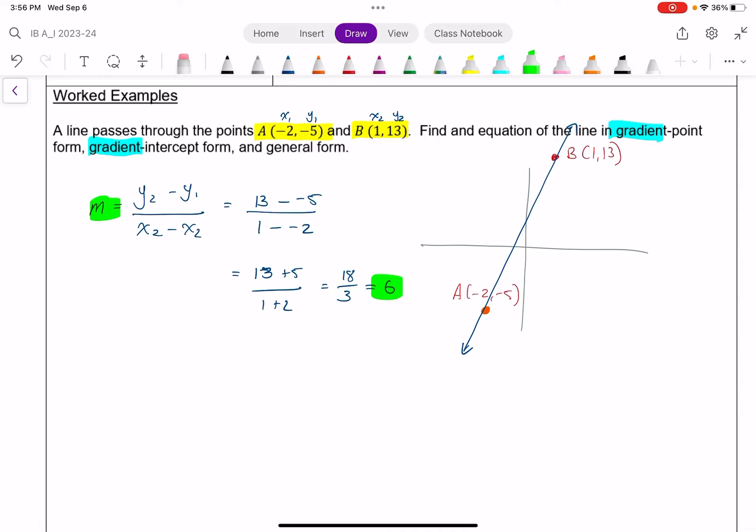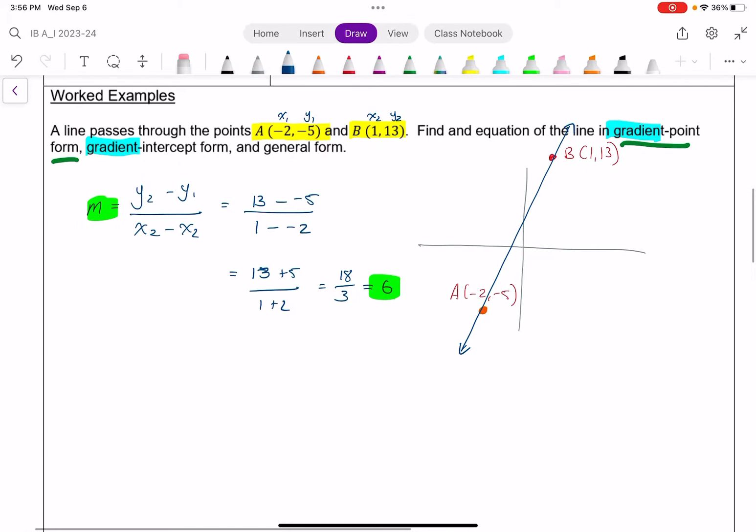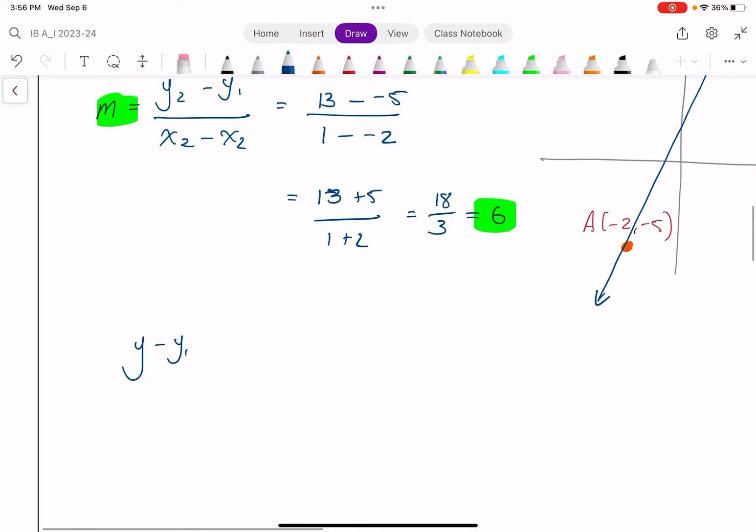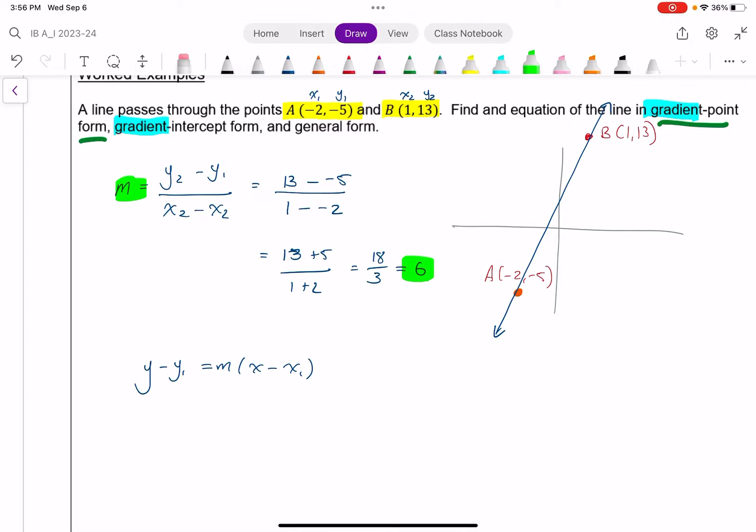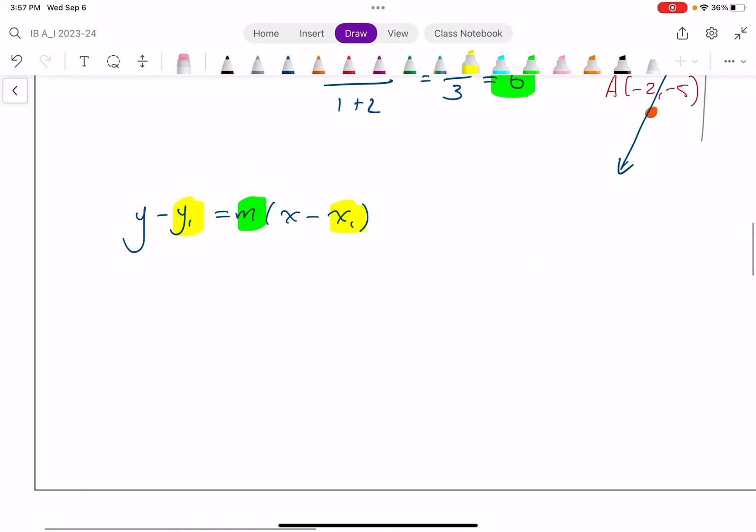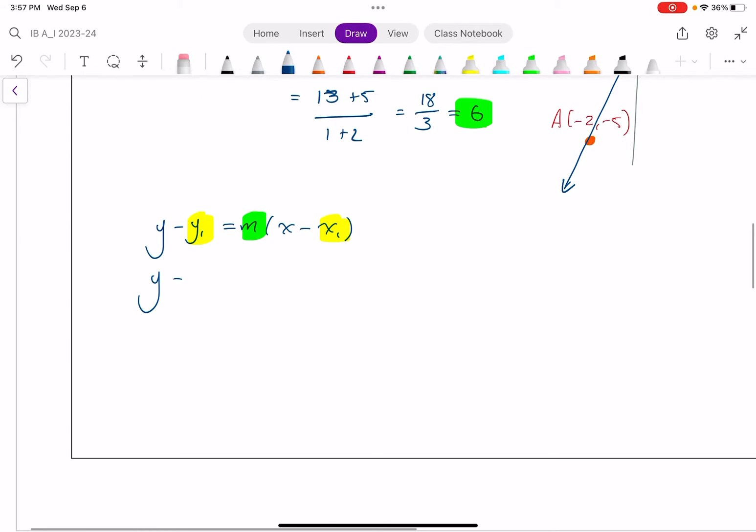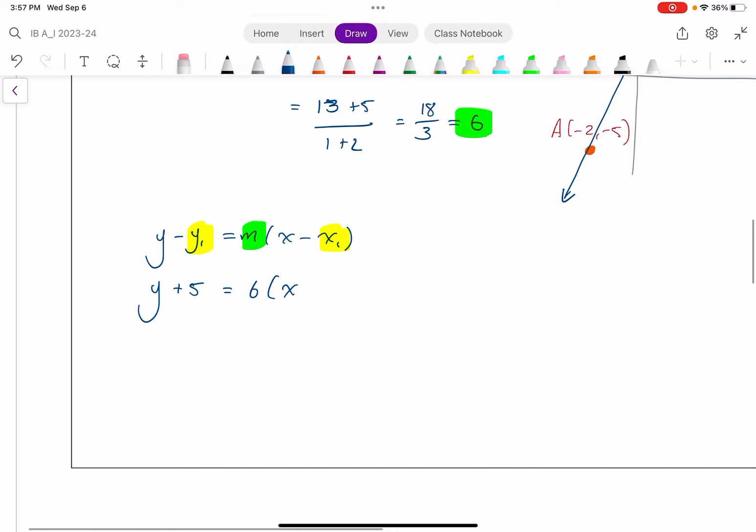All right, now I can find the equation. The first one we ask for is gradient point form, and that's probably the easiest to get started with. Gradient point form, also known as slope point form. If we know a single point and the slope of a line, we can find the equation almost immediately. And I know the slope, and I know two points. So I'll just pick one of these, I'll pick x1y1 for that. So y minus y1, which is, again, y1 is negative 5. So instead of writing minus negative 5, I'll write it as y plus 5 equals slope times x minus x1. And x1, again, is negative 2. Instead of writing minus negative 2, I'll just write plus 2.